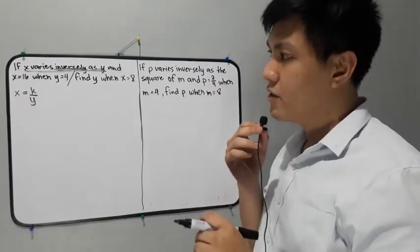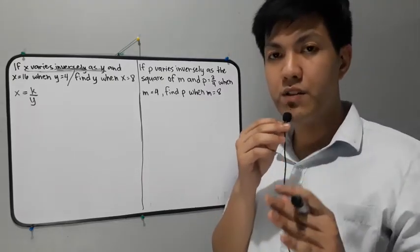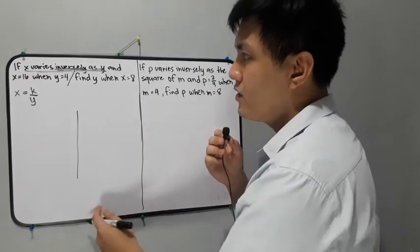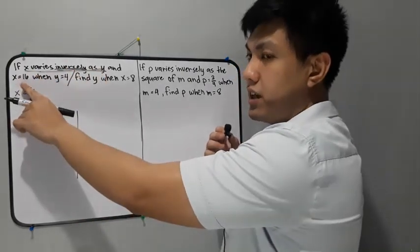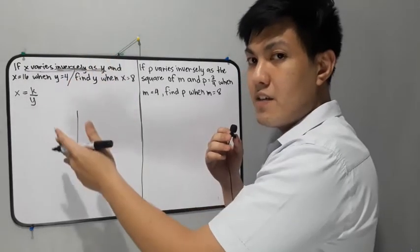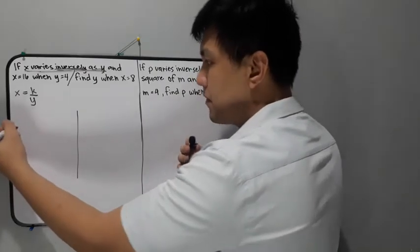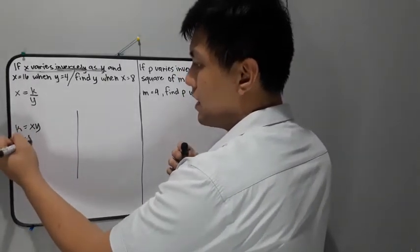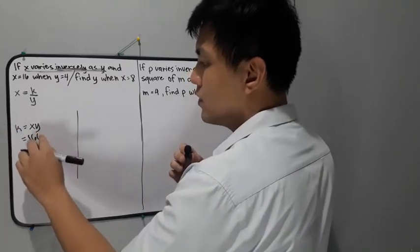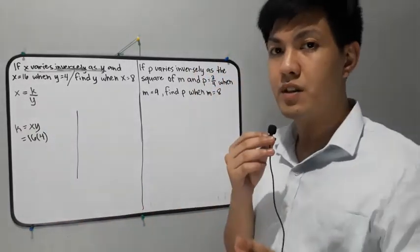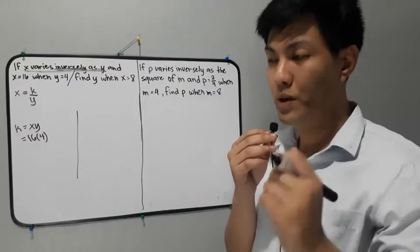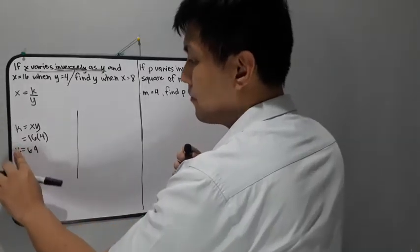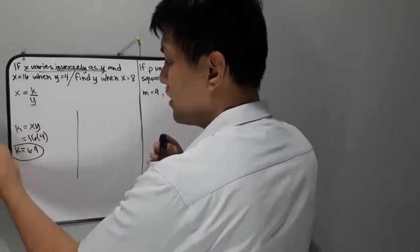After dividing the whole given, we look for the value of the constant using the first part of the given statement. Since the given is inverse variation, the formula for the constant is k is equal to x times y. In inverse variation, when looking for the constant, we multiply. Where x is equal to 16 and y is equal to 4: 16 times 4 is 64. Therefore the value of k is 64.